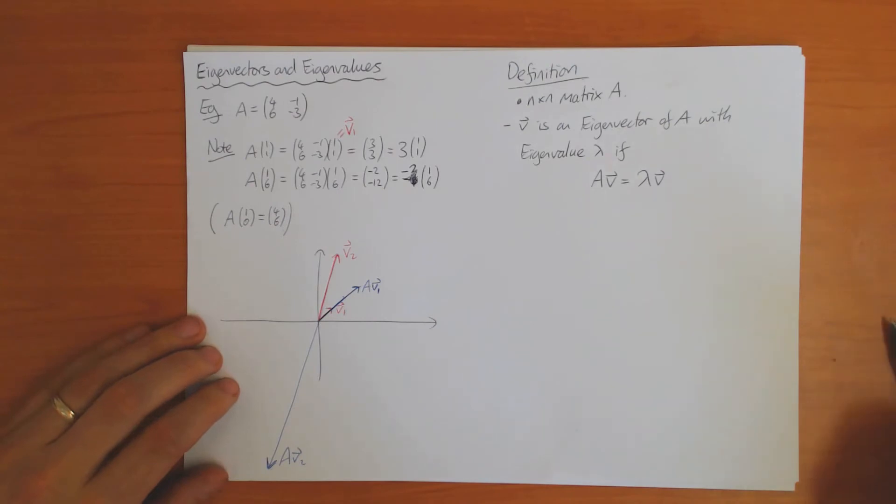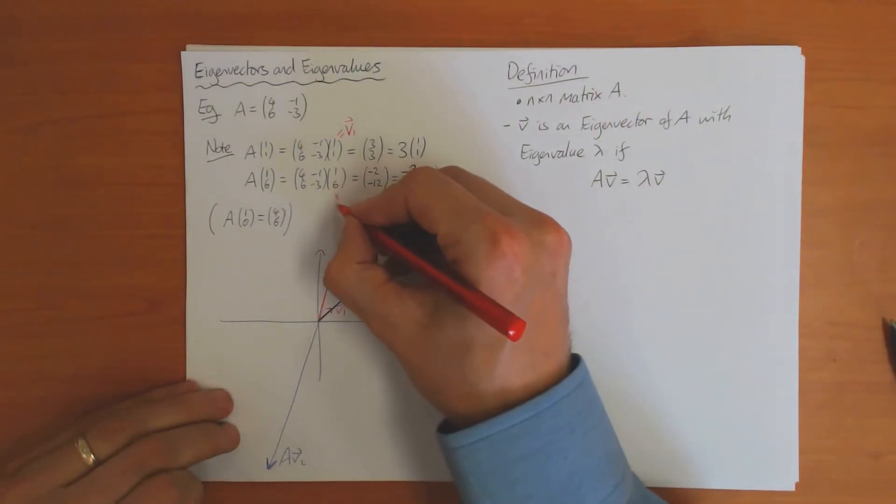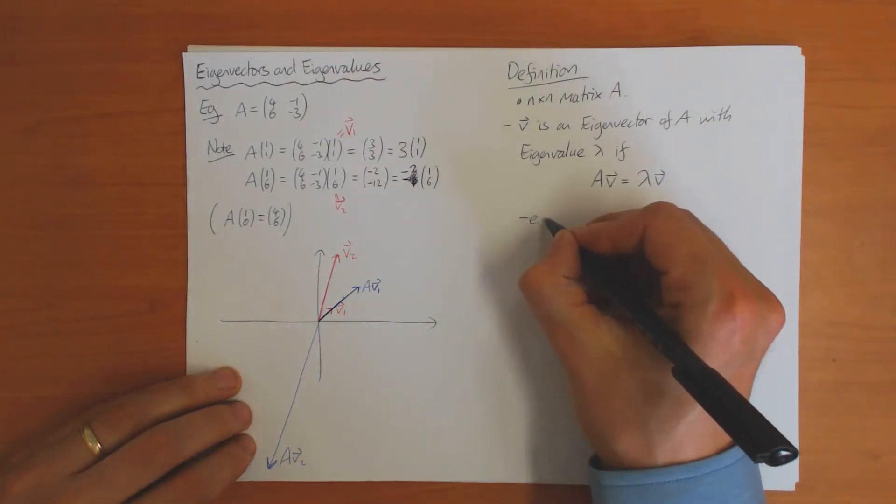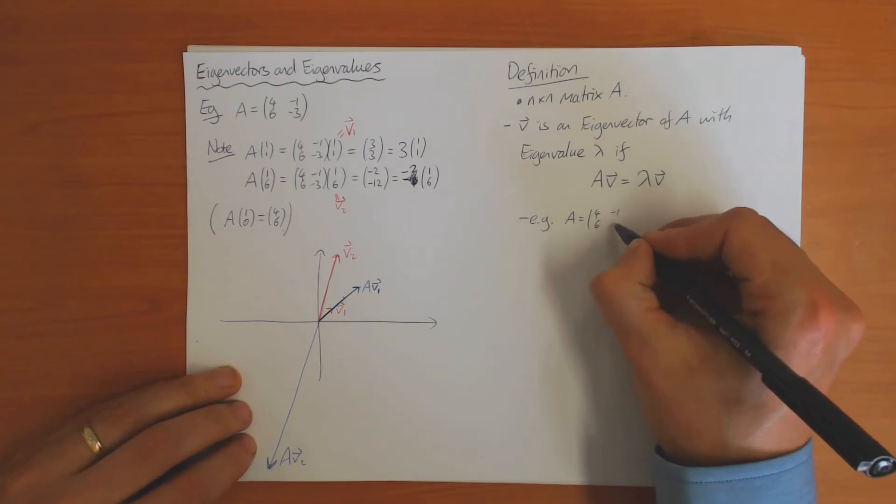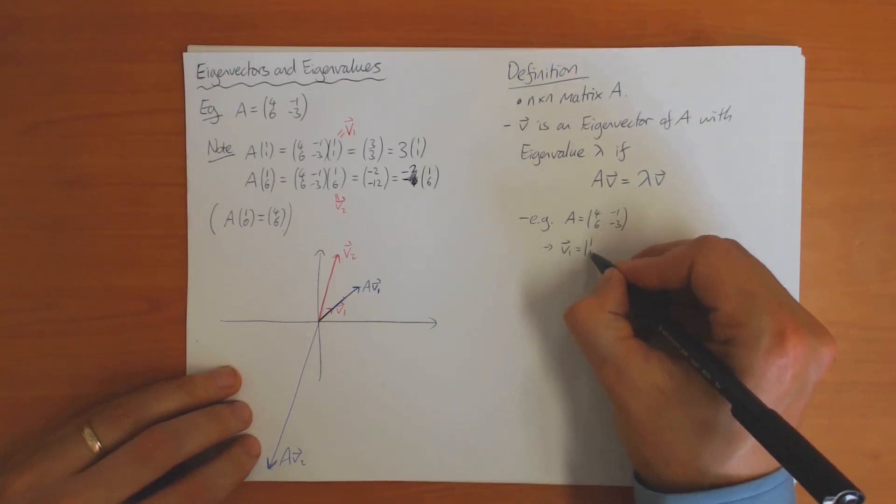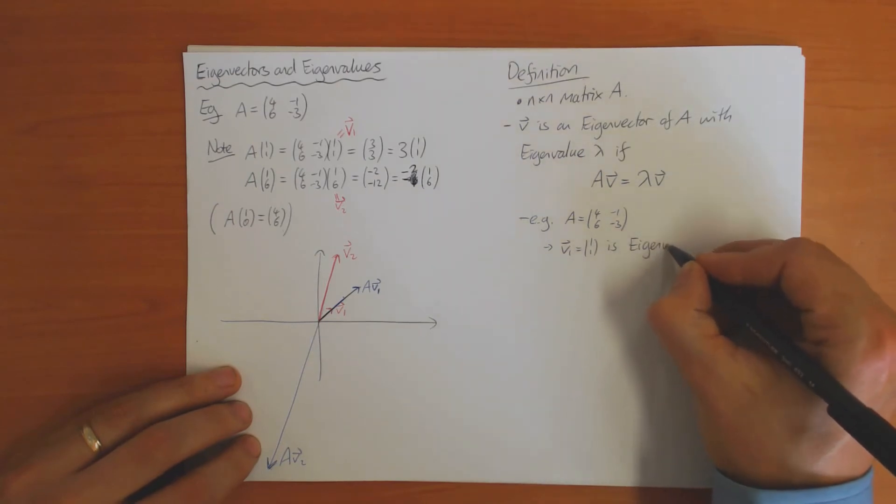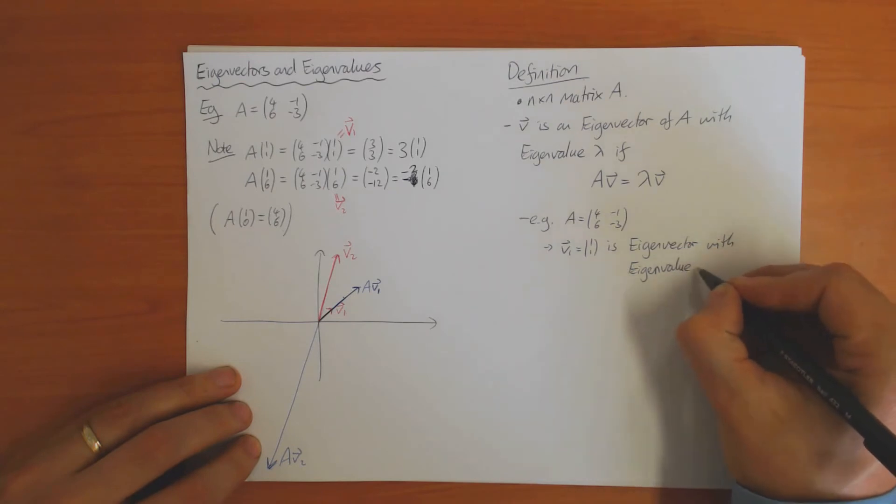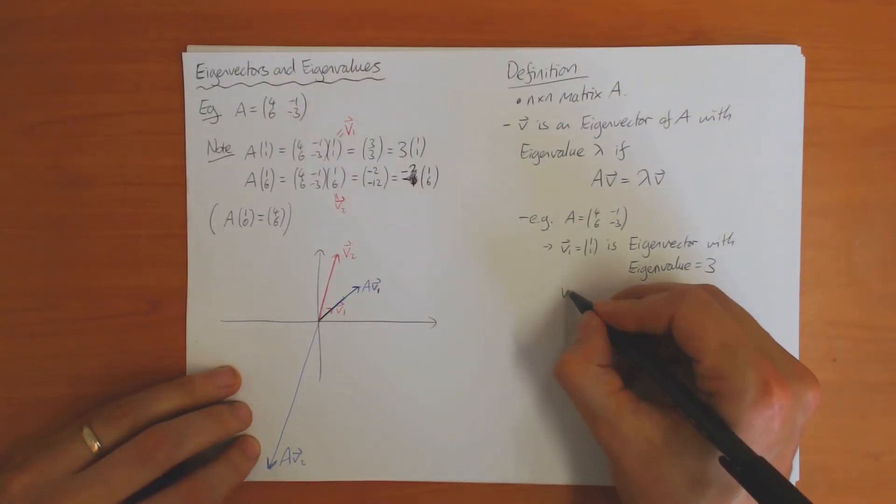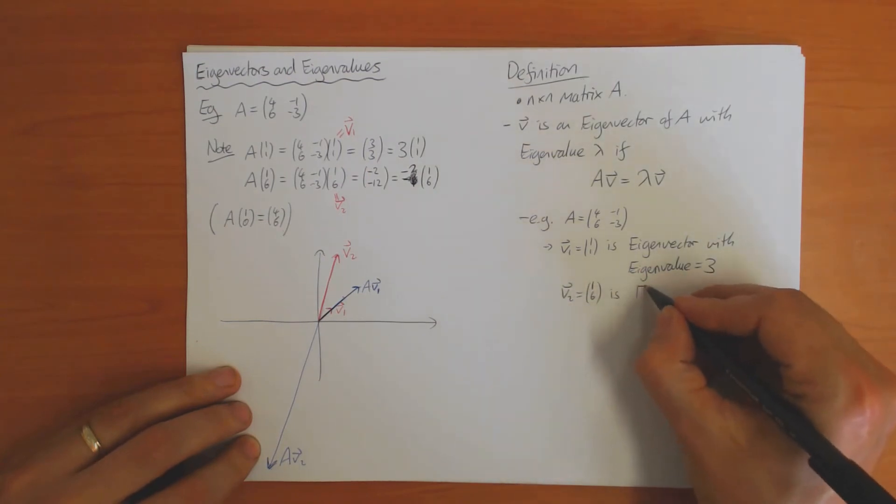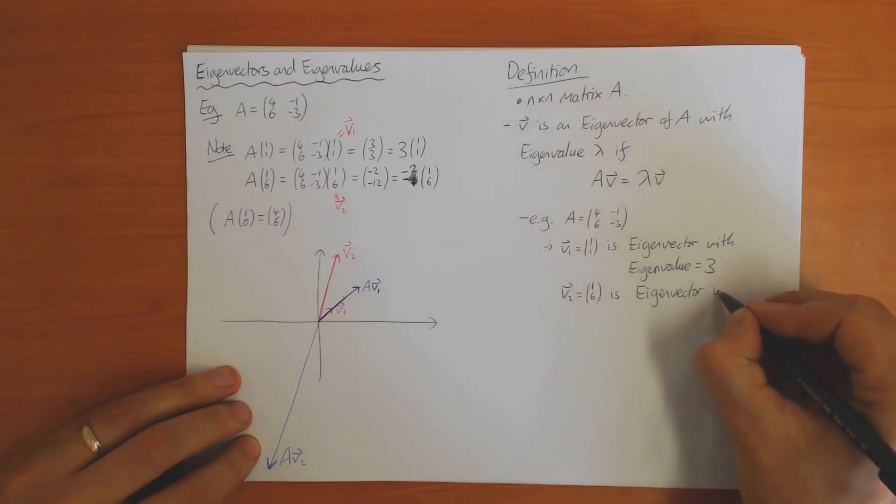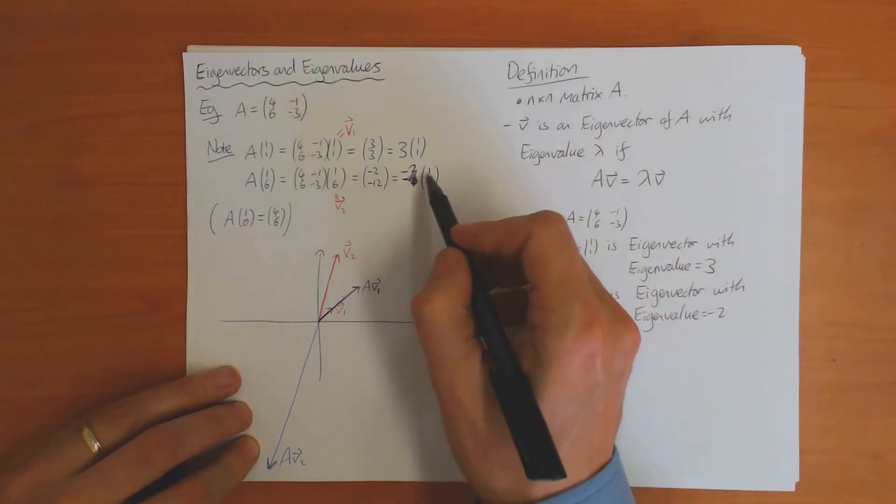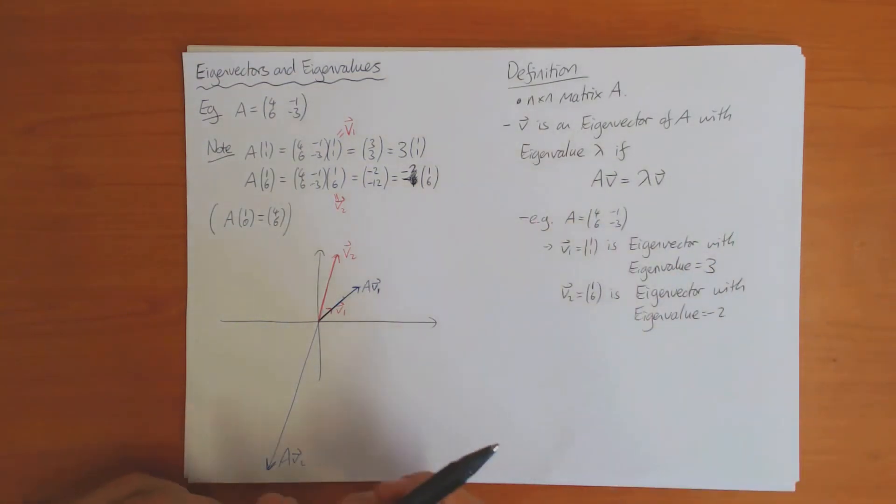For this matrix [4 -1; 6 -3], what we've shown is that v₁ = (1,1) is an eigenvector with eigenvalue equal to 3, because it multiplies by 3. And v₂ = (1,6) is an eigenvector with eigenvalue -2, because it multiplies by -2.